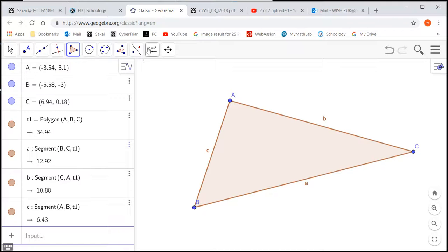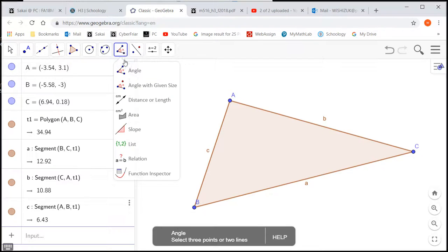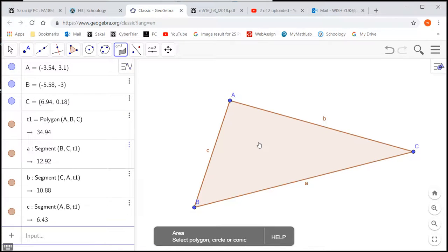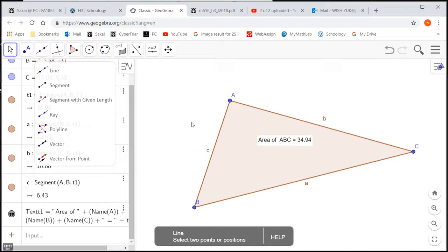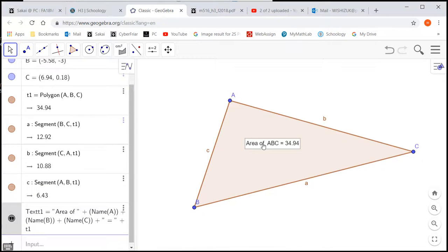Then what we can do first is find the area. If you go to the area tool and click on that polygon, we have the area. I'm going to place this right in the middle.